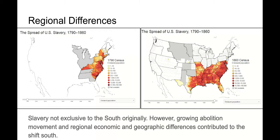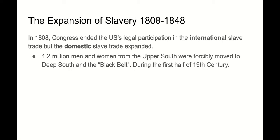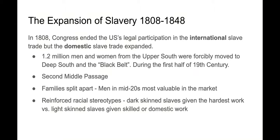What causes this expansion of slavery from the early 1800s to the 1850s? Congress ends legal participation in the international slave trade, but the domestic market expanded. We had 1.2 million men and women in the Upper South that were forced to move into the Black Belt during that time period — this is known as the Second Middle Passage. Families were being torn apart and sold. Men in their mid-20s were most valuable because they were strong and could do the heavy labor of plantation farming. We also saw a reinforcement of racial stereotypes: the more dark-skinned a person was, the harder the work they were given, while lighter-skinned slaves were allowed to do household work and act as personal servants.